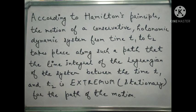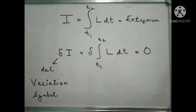So there are infinitely many possible paths. If the system goes from initial point A to B, there are infinite possible paths. But the system follows the path where the line integral of the Lagrangian from time t1 to t2 is stationary. So we write: I = ∫(t1 to t2) L dt = extremum. Extremum means stationary or constant.